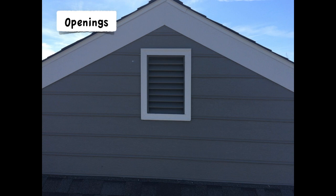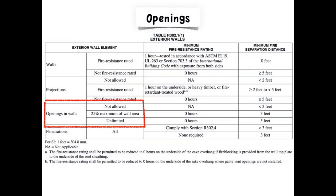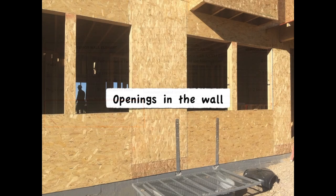Since we're talking about gable vents, they're also openings. So let's go into the third element on the table. Openings are simply limited by area — what's allowed or not allowed. This is about openings in the wall in general, so it's good to imagine what an opening is by thinking about the rough framing stage of the house.